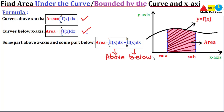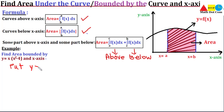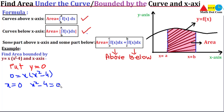Let's start with the example. We have to find the area bounded by the curve y = x(x² - 4) and the x-axis. Since no limits are given, we find where the curve cuts the x-axis by putting y = 0. This gives 0 = x(x² - 4), so x = 0 and x² - 4 = 0, giving x = ±2. These are the three points where the curve cuts the x-axis.